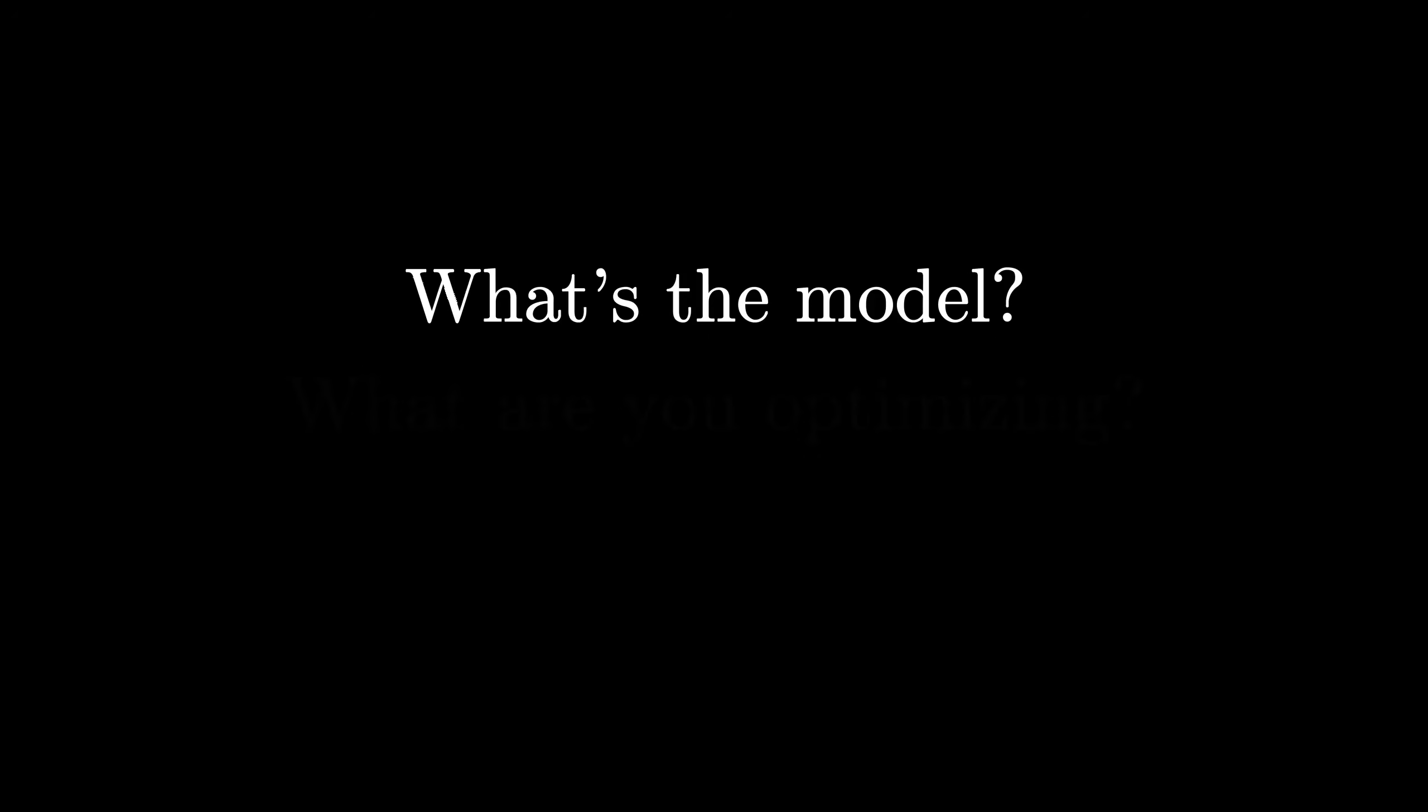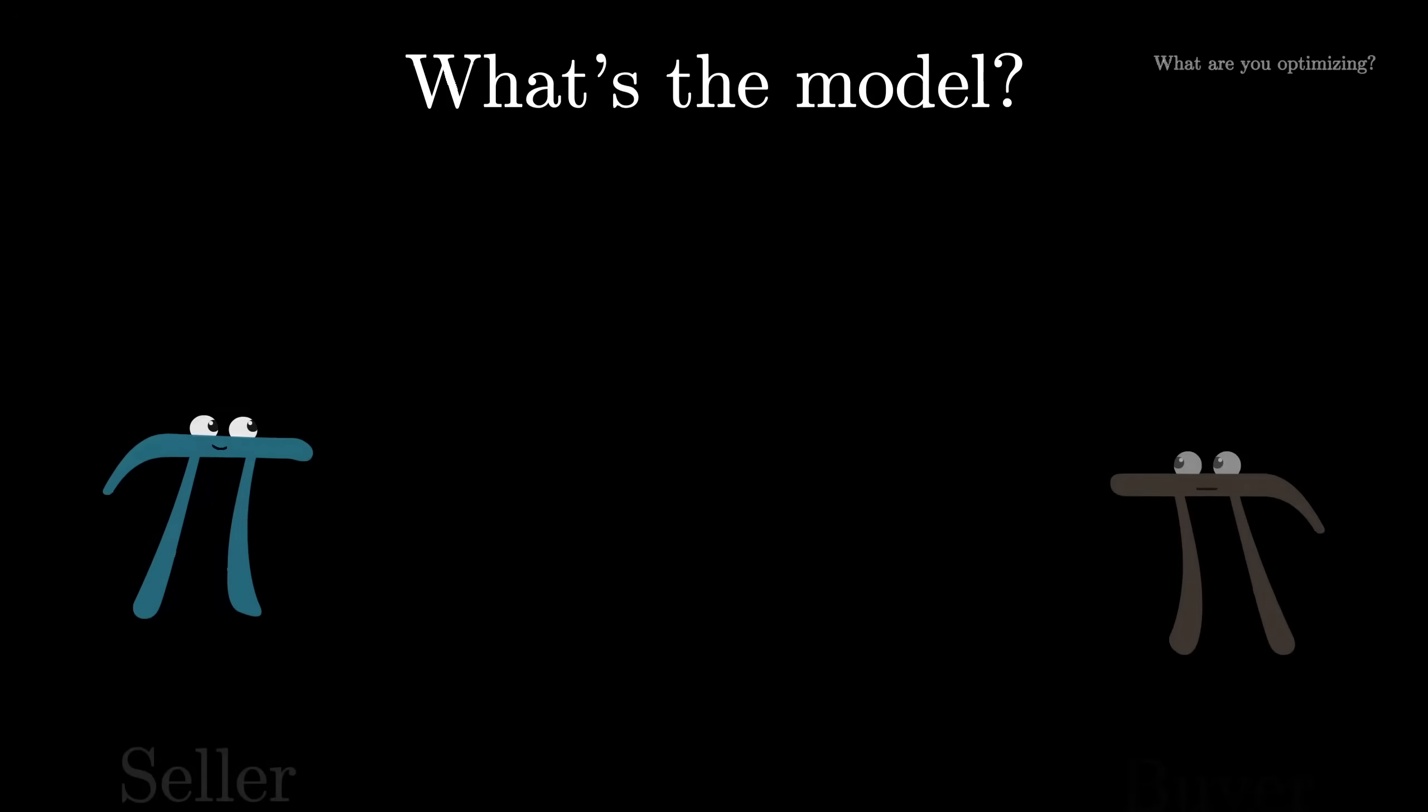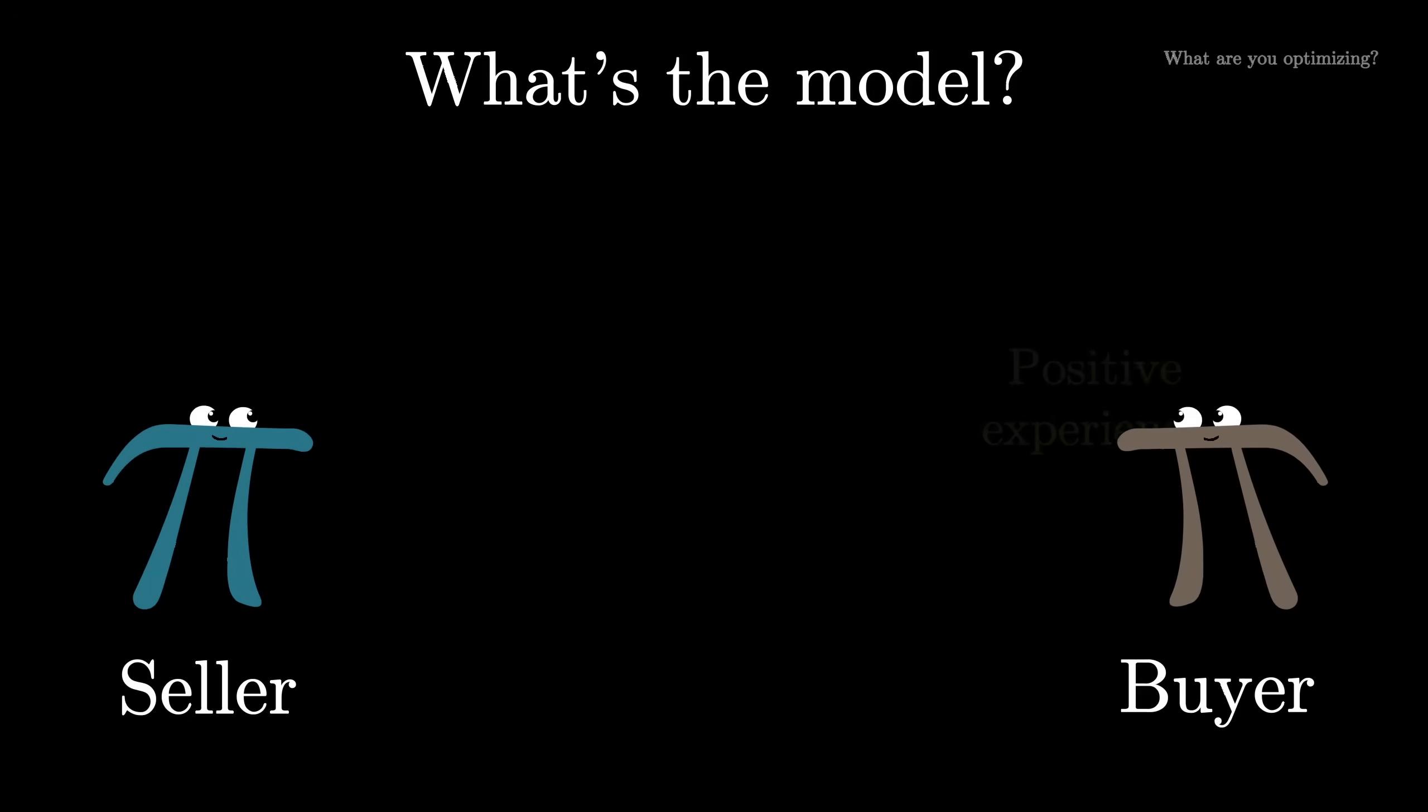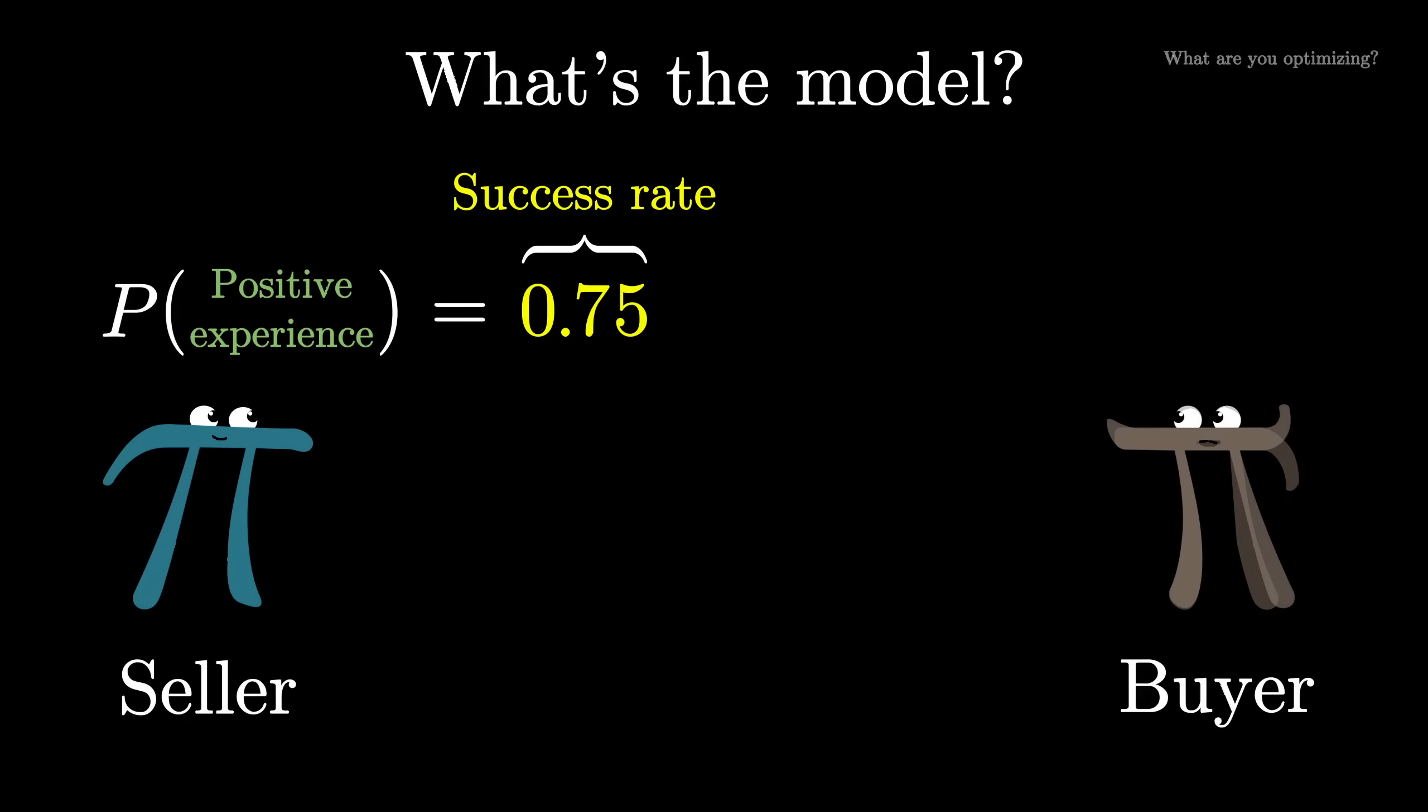Step 1, how exactly are we modeling the situation, and what exactly is it that you want to optimize? One option is to think of each seller as producing random experiences that are either positive or negative, and that each seller has some kind of constant underlying probability of giving a good experience, what we're going to call the success rate, or S for short. The whole challenge is that we don't know S.